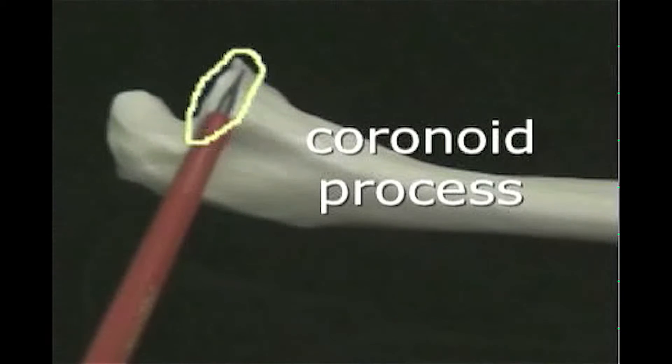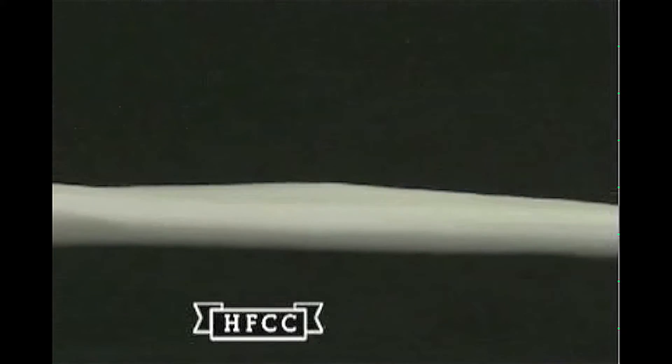Then this edge here is the coronoid process. This will articulate with the humerus.